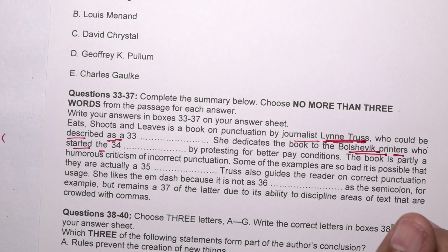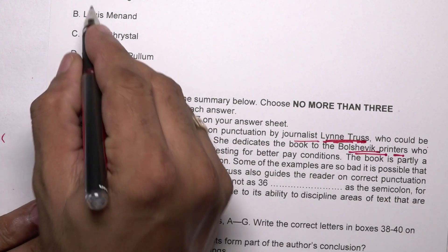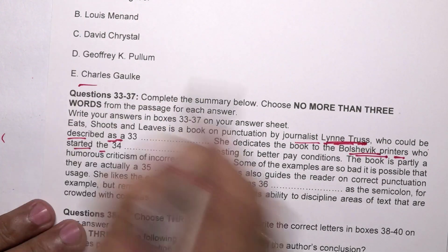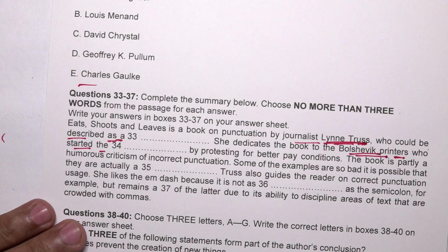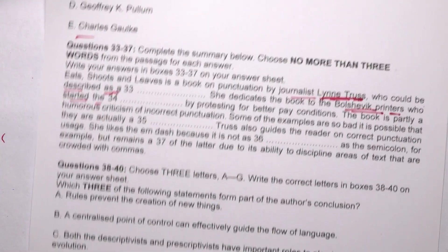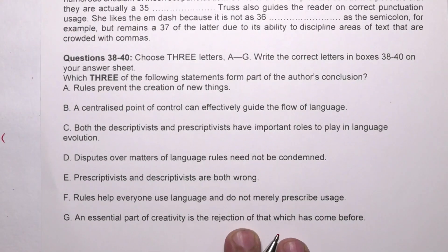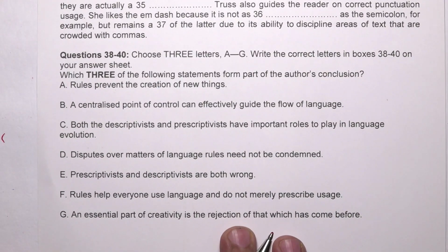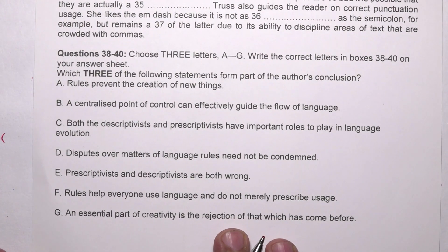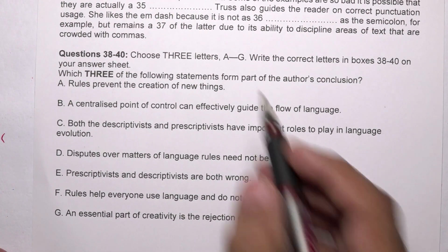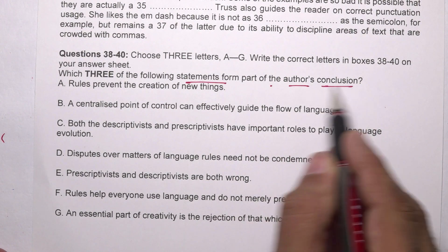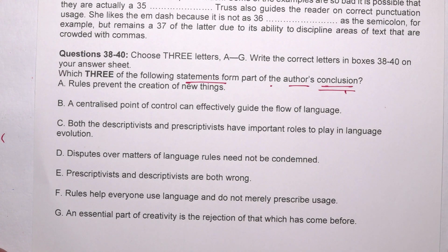The list of people includes: Kurt, Lewis, David, Geoffrey, Charles. Questions 38 to 40 say: letters A to G, write the correct letter in the boxes. Which 3 of the following statements form part of the author's conclusion?